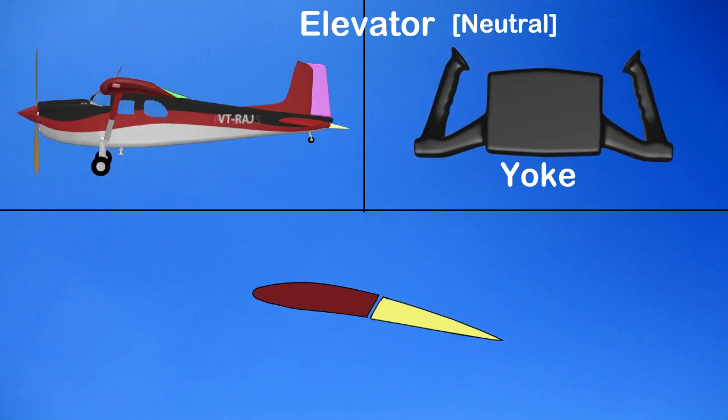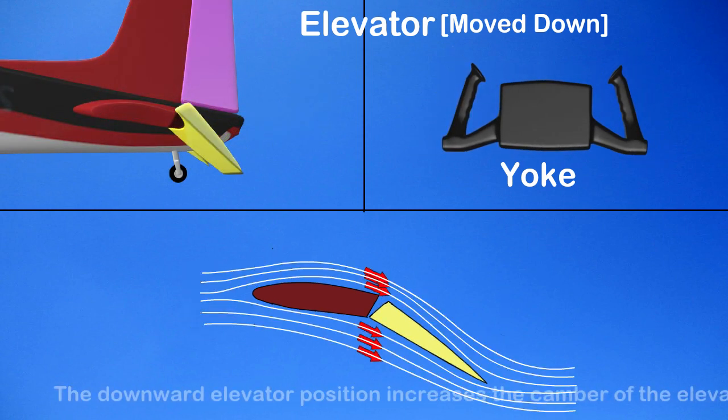Now the elevator is back in the neutral position. To pitch the aircraft nose down, the pilot moves the yoke forward.